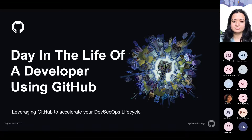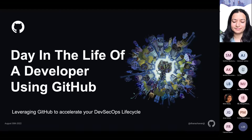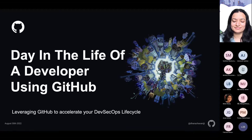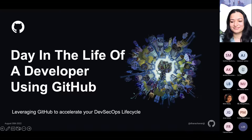The speaker today is Dhanasit Zawan, a senior enterprise advocate at GitHub who closely works with the developer community to build awareness around GitHub products and features and advocates for customer needs internally. Prior to GitHub, she spent over 14 years in the US and Malaysia in roles spanning engineering, professional services, and sales. If you have any questions, please use the chat — we'll take questions at a logical break or towards the end of the presentation.